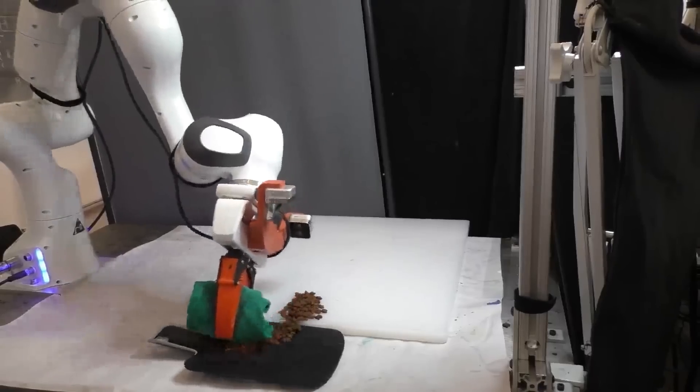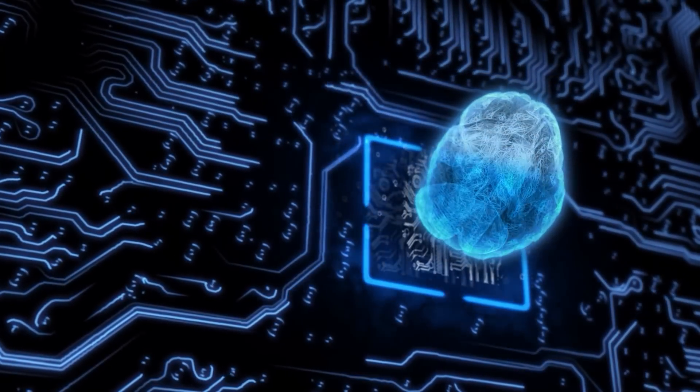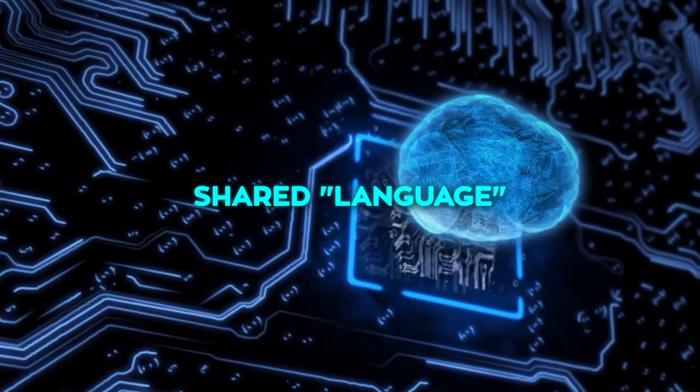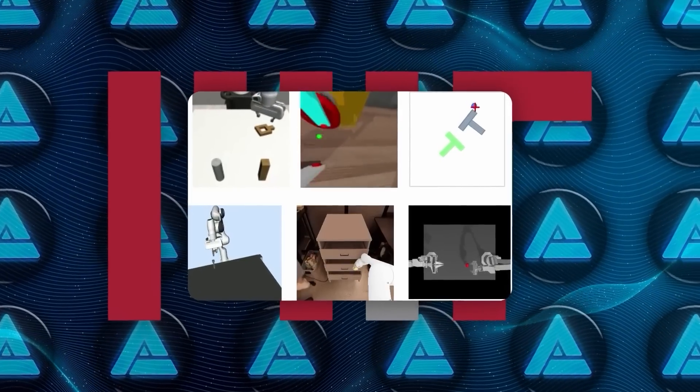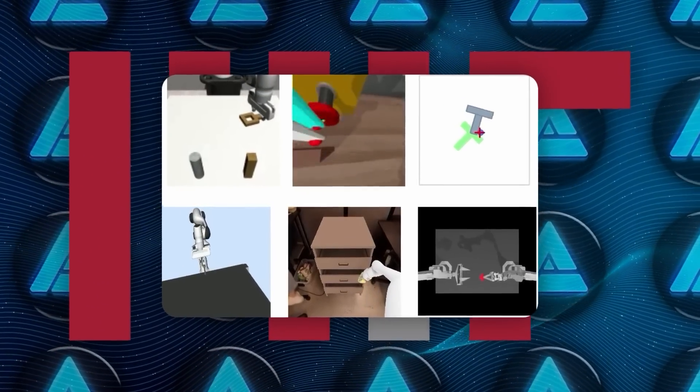Normally, every robot has its own unique setup, a different number of arms, sensors, or cameras placed at various angles. HPT aligns all of this into what they're calling a shared language, essentially a way of combining all this varied input so that a single model can make sense of it all.